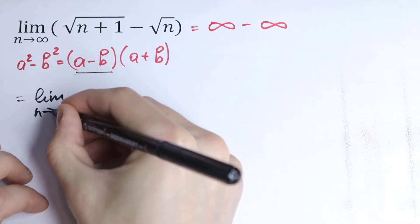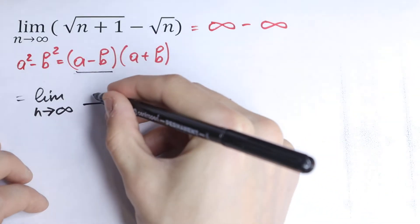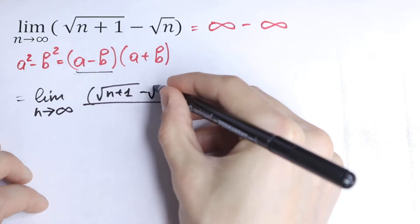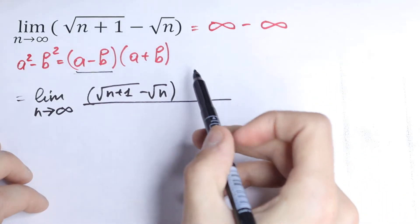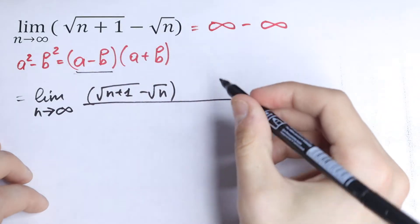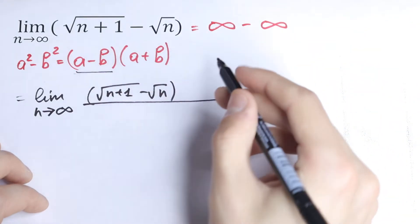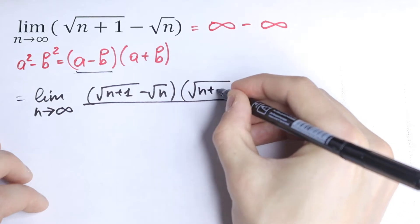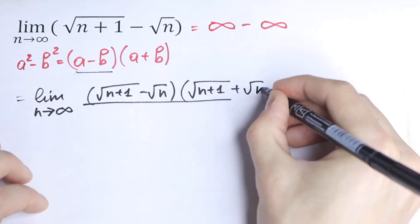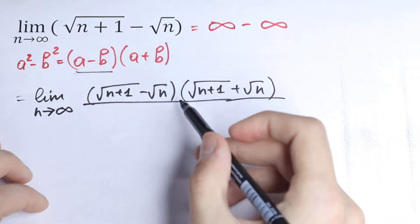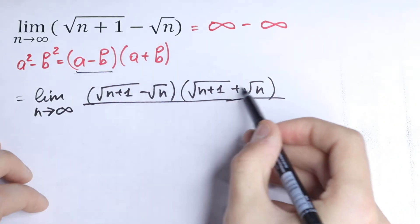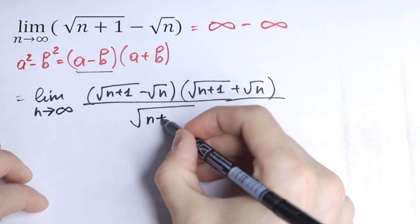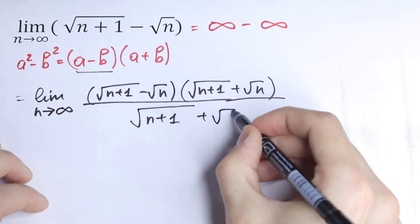So let's multiply this with the plus sign. So we will have the limit as n approaches infinity of the function square root of n plus 1 minus square root of n. And we multiply this by the conjugate of this function, so with the plus sign. So we will have square root of n plus 1 plus square root of n. And we of course need to divide by the same thing: square root of n plus 1 plus square root of n.